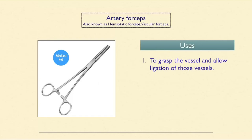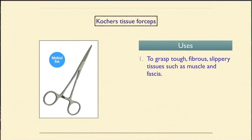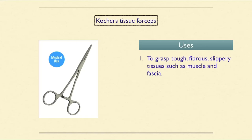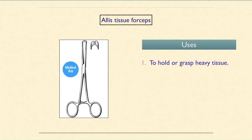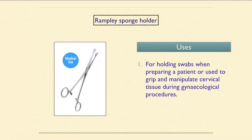Couture tissue forceps are used to grasp fibrous, slippery tissues such as muscle and fascia. Alice tissue forceps are used to hold or grasp heavy tissues. Ramplace sponge holder is used for holding swabs when preparing a patient, or to grip and manipulate cervical tissue during gynecological procedures.